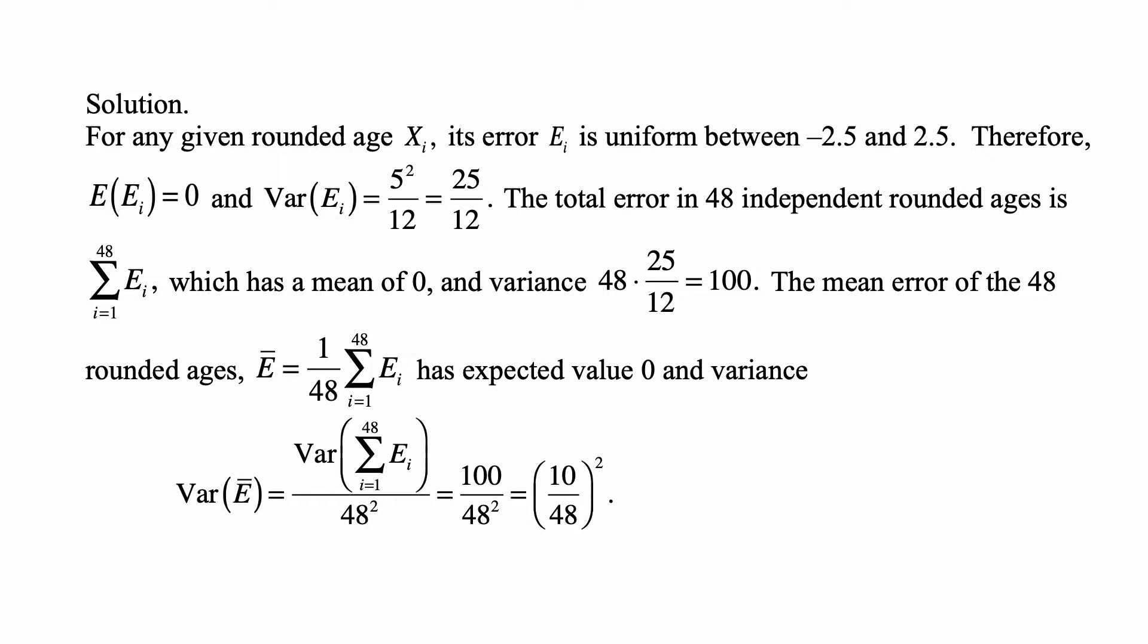The total error in 48 independent rounded ages is the sum of those individual errors, and these are independent, identically distributed random variables. The mean of that total is 48 times 0, so 0. And the variance is 48 times 25/12. Now we can add the variances because they're independent, and each one of them has variance of 25/12, and there's 48 of them. 48 divided by 12 is 4, and 4 times 25 is 100.